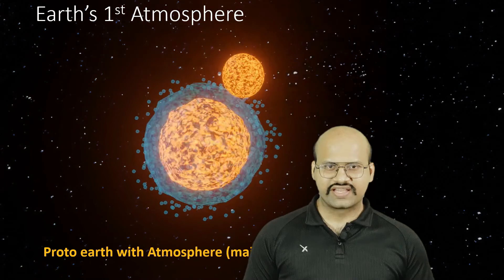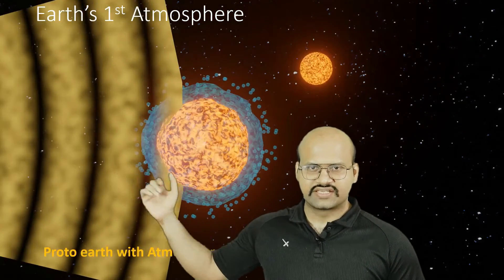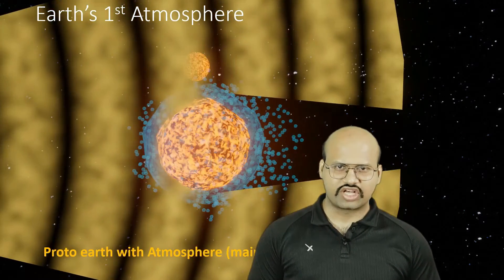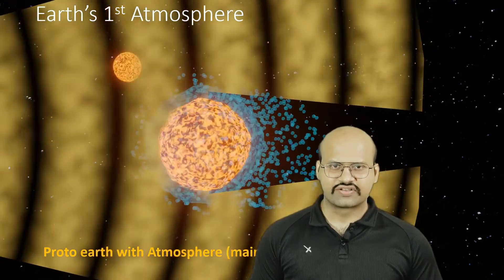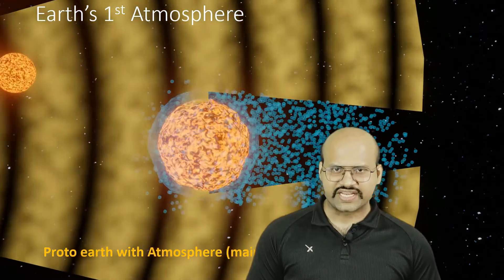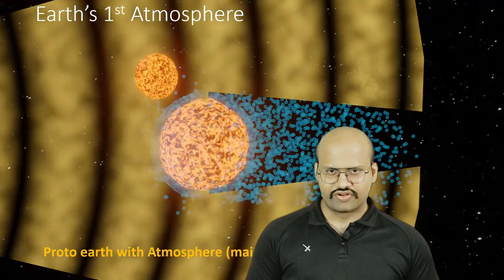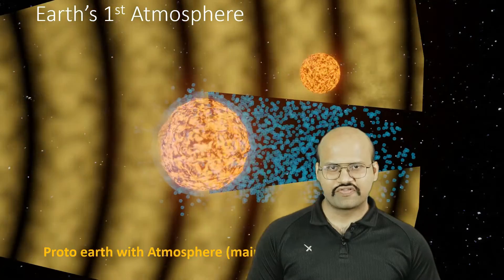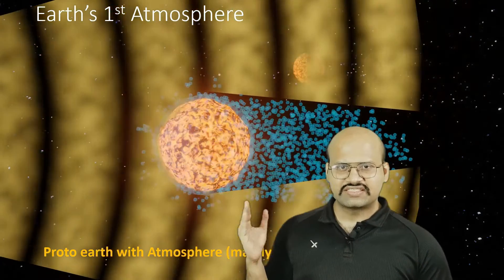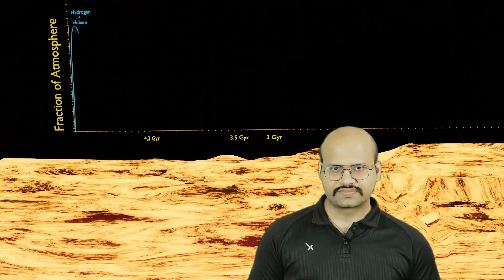Moreover, there were a large number of solar storms from the Sun, and during these solar storms a lot of gases were moved away from our atmosphere because the gravitation was not strong enough to hold on to these elements. Therefore, the initial atmosphere was ripped away from the Earth.